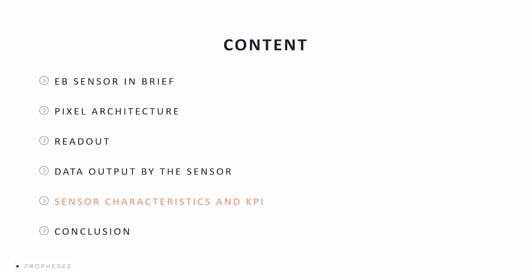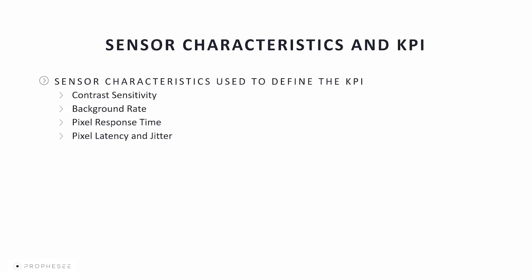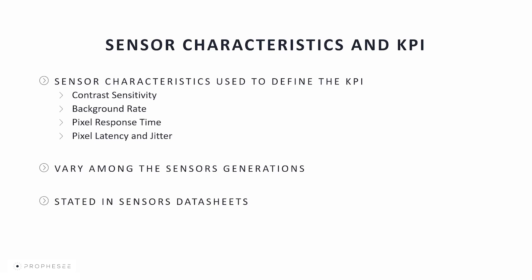The following sensor characteristics are used to define the KPIs: contrast sensitivity, background rate, pixel response time, pixel latency and jitter. We won't give exact KPI values here because they vary from sensor generation to generation — check the sensor datasheet for your particular sensor. We will introduce each characteristic and give you the definition so you know what to look for.